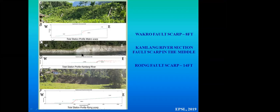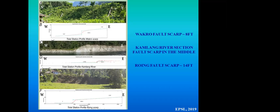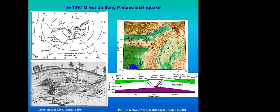Additional river sections show fault scarps with an approximately eight-feet-high fault scarp. The fault is not a short one — it is elongated, almost 200 km in length, with a sharp bend. Multiple river section exposures confirm these fault scarps, all related to the 1950 earthquake and earlier events. These results have been published in EPSL 2019.